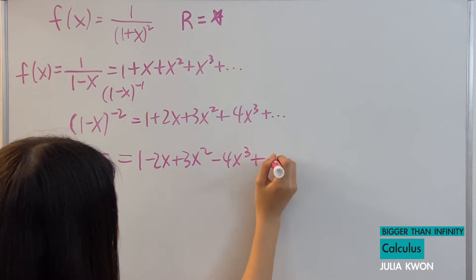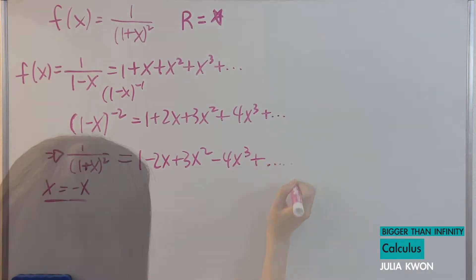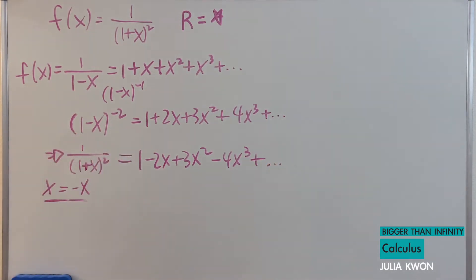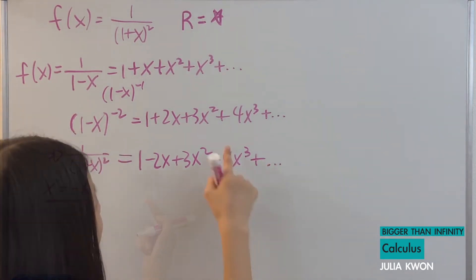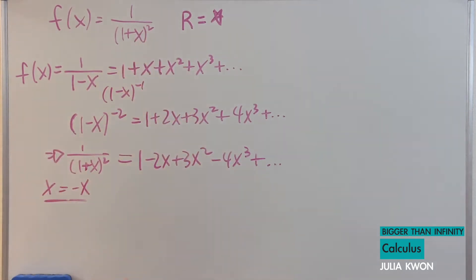And minus 4x cubed, since negative to the power of 3 is still negative. And so on. And now we have found our function turned into a polynomial series representation.